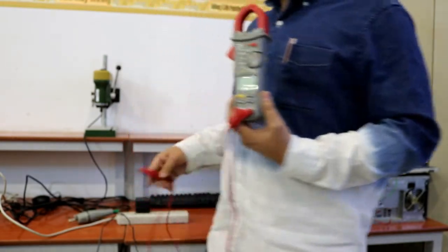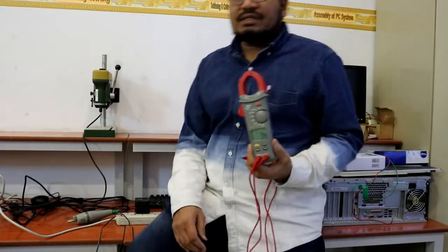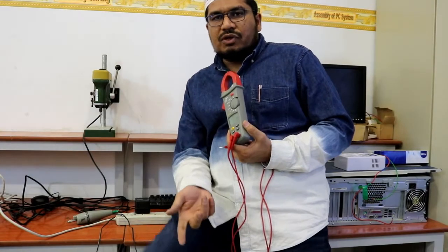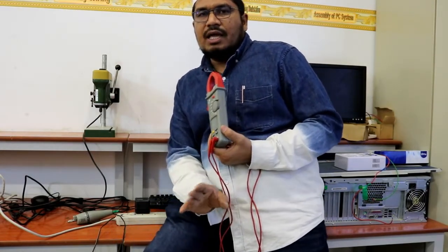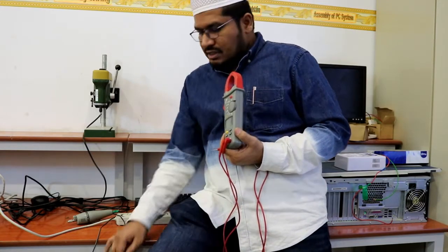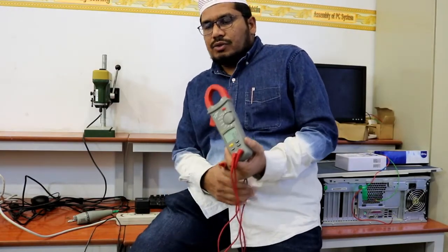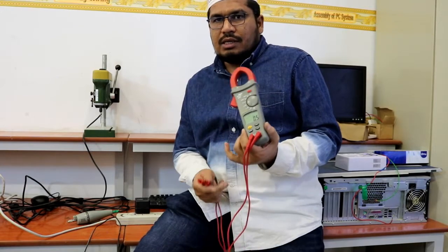So for any supply, there will be a plus or minus 5% tolerance. So 220 volts, plus or minus 5% tolerance, it is permissible for any country supply voltage. So we are getting supply from this ECO company, the electricity company. So what it is showing is 229.